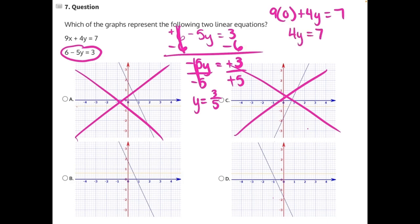4 is being multiplied to y, so to isolate it, we need to divide both sides by 4. y is going to equal 7 over 4.